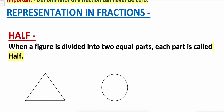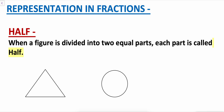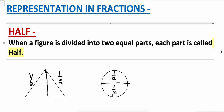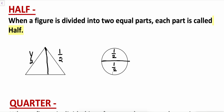Now, the representations in fractions. What do you mean by half? When a figure is divided into two equal parts, each part is called the half. This is a triangle and if I divide it into two equal parts, this will be one by two and this also one by two. This is a circle and if I divide this circle into two equal parts, the upper part will be one out of two and the lower part will be one out of two. This is how I have divided the figure into two equal parts, which is called half.